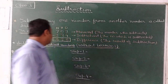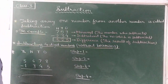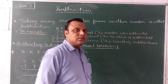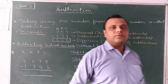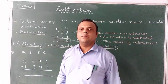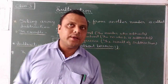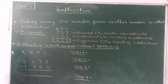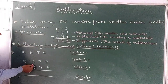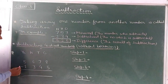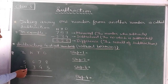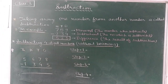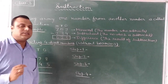Next, we will learn how to subtract 4-digit numbers without borrowing. The question given here is 5,678 minus 1,341. We have to follow 4 steps.